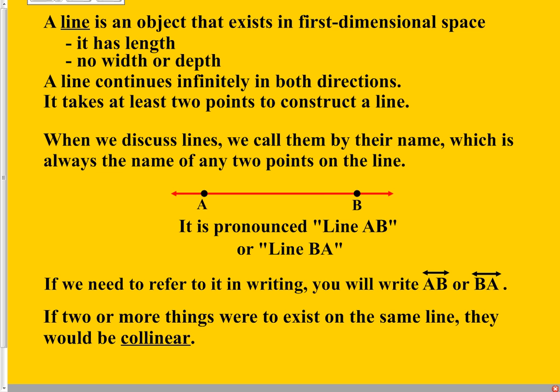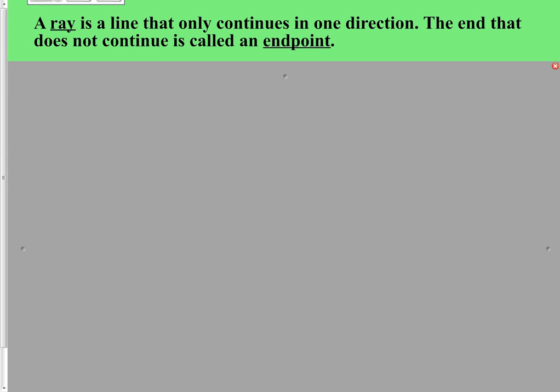We saw our first instance of little symbols used throughout the year. A line can be symbolized by writing your two points back to back with a little line with arrows on both ends over the top of them, since lines go on infinitely in both directions. We came across the term collinear, which means of the same line — any two things that are in the same line are collinear.